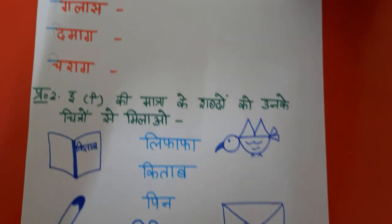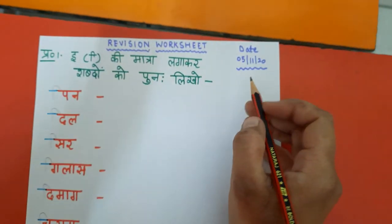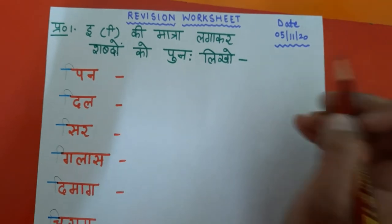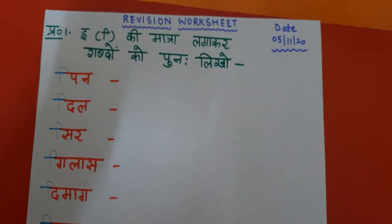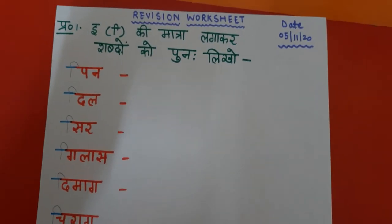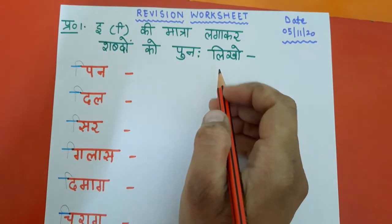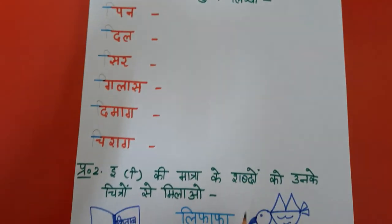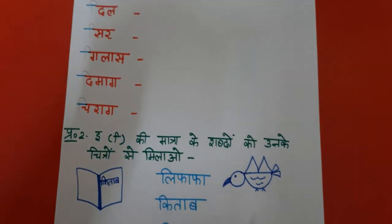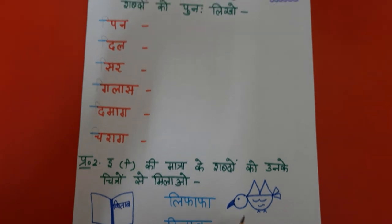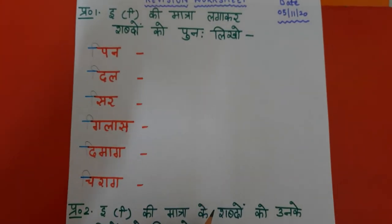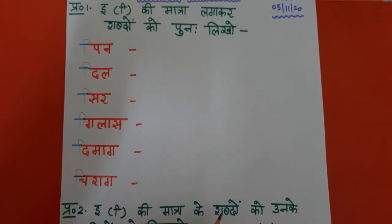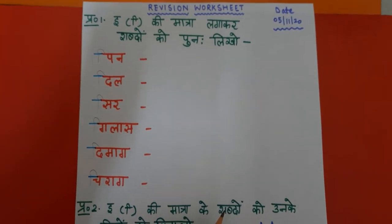First of all, you have to put today's date in your notebook. After that, write down classwork. Then write down revision worksheet. And then you have to solve this worksheet in your notebook. Ok, children? That's all for today's class. We'll meet in the next class. Till then, bye-bye. Take care.